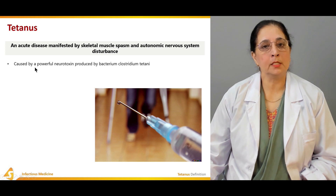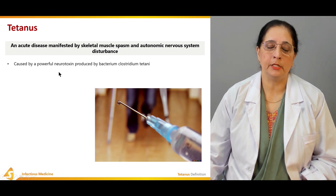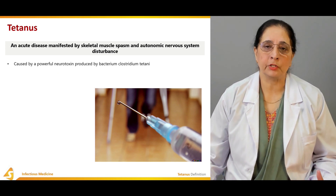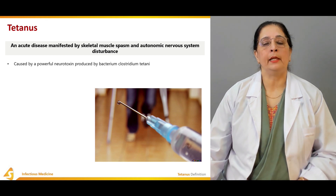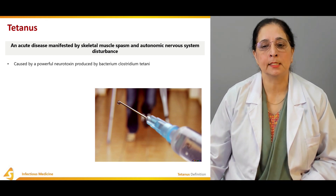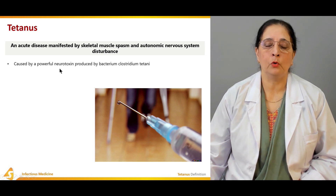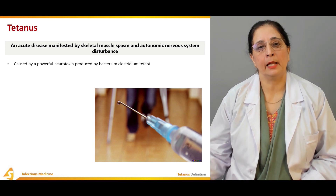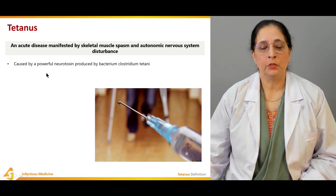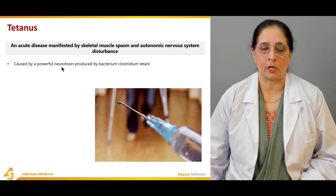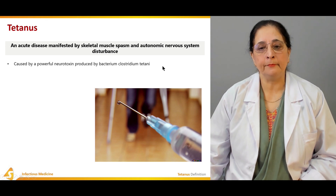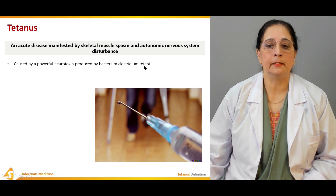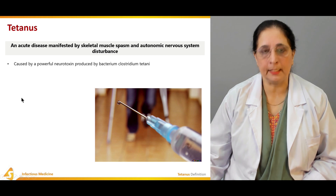Tetanus can be caused by a powerful neurotoxin — a toxin produced by Clostridium tetani, which is the causative bacterium of tetanus. As the name suggests, this neurotoxin attacks the nervous system and causes different abnormalities associated with tetanus.